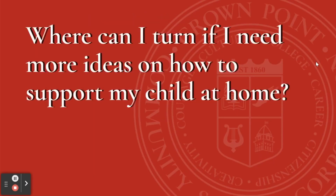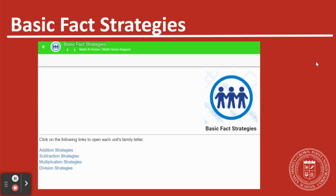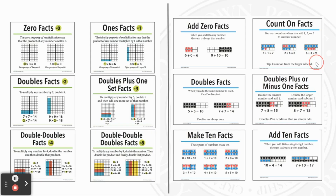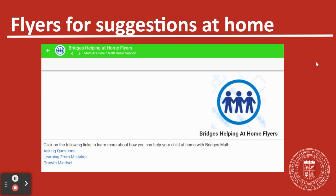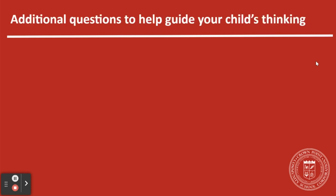Where can I turn if I need more ideas on how to support my child at home? Within each of the folders is also the basic fact strategies. These strategies explain how your child learns the different addition, subtraction, multiplication, and division strategies. Here are just a few examples of what you may find within those folders. There are also flyers for suggestions on what you can do at home when your child may be struggling with their assignment — a flyer on asking questions, learning from mistakes, and having a growth mindset.